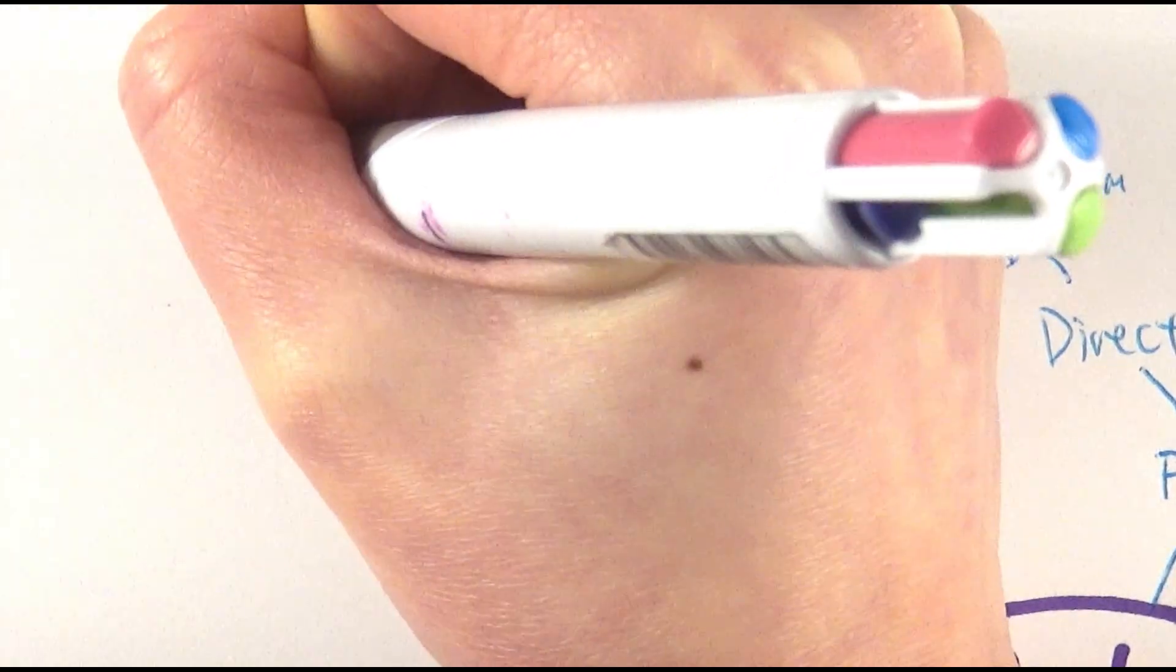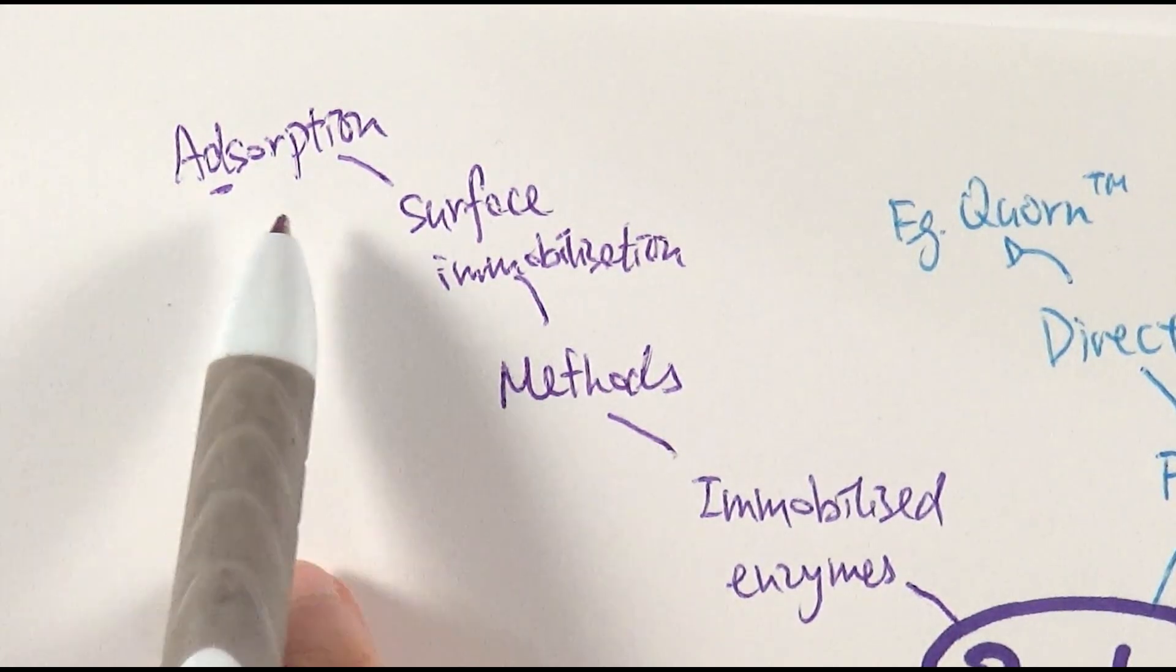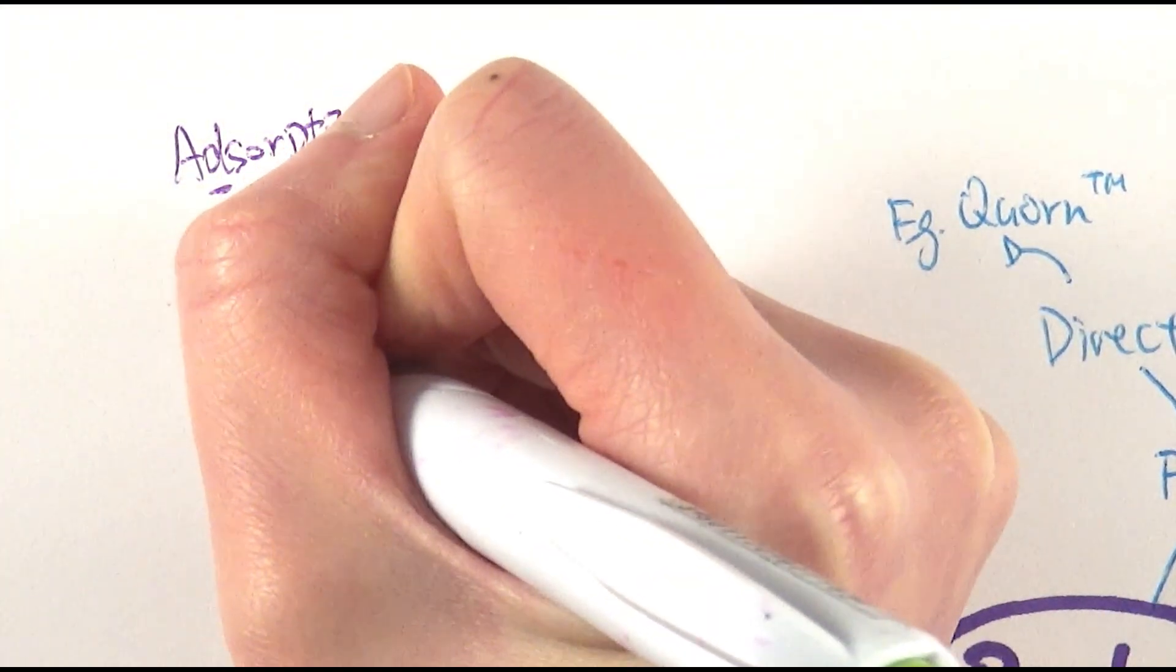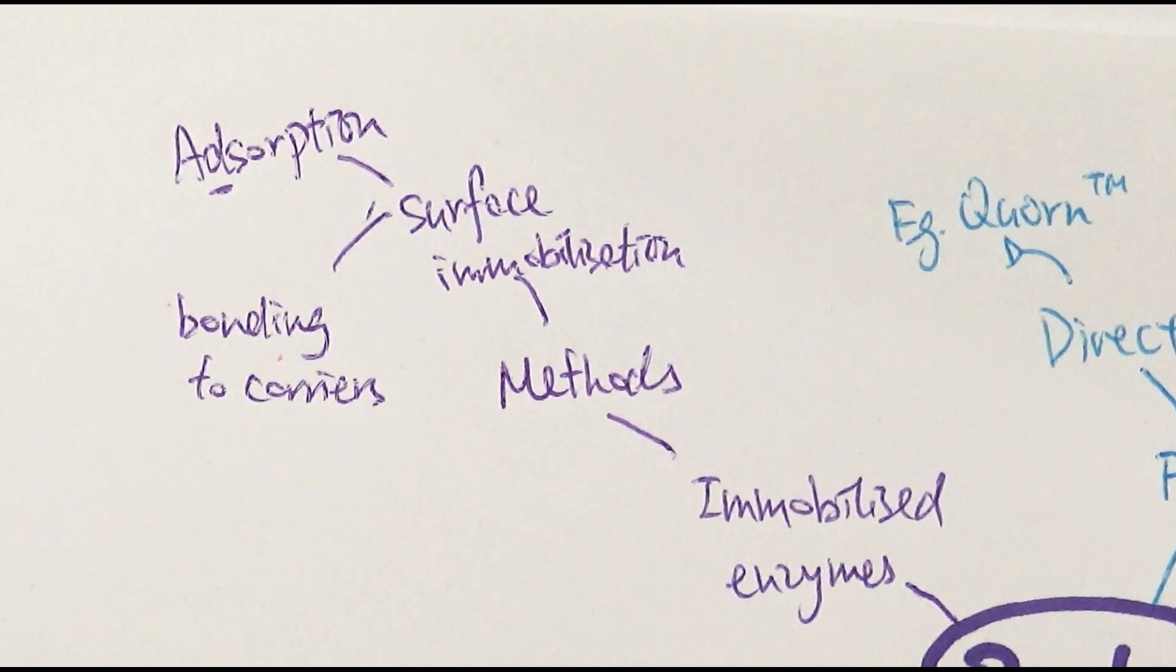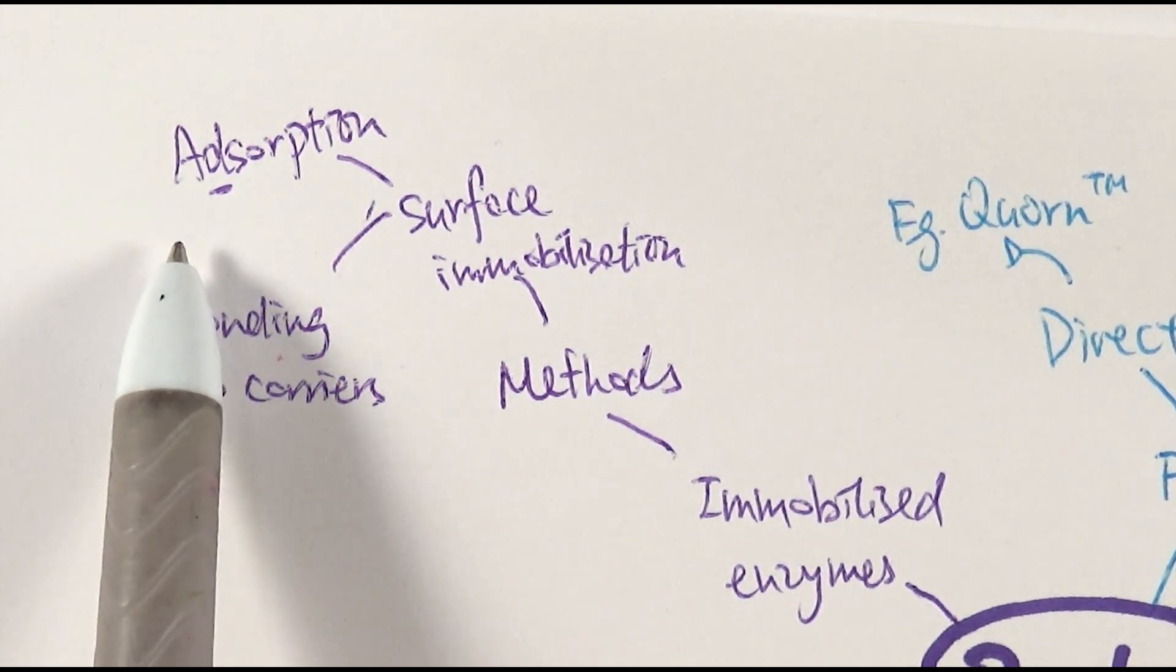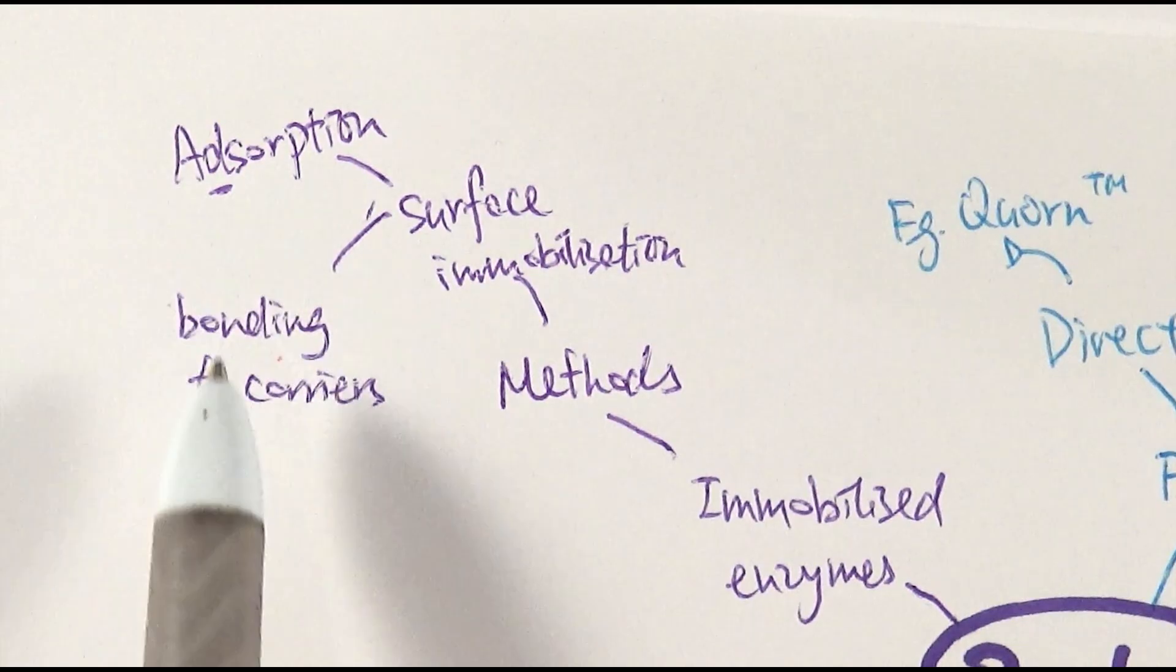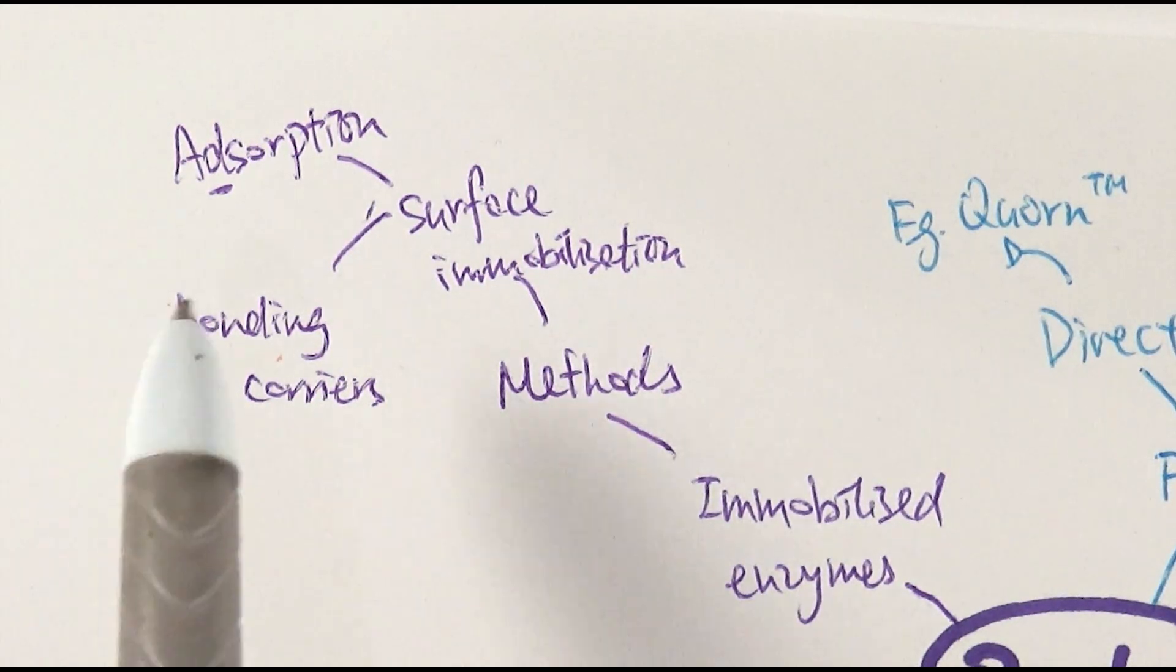One of the methods is called adsorption. Notice it's adsorption with a D, not absorption which is a B, that's totally different. So that's one of them, where they're just simply sticking the enzymes on the surface. Or perhaps you can have ionic or covalent bonding to carriers. They're both very similar, sticking enzymes on the surface. However, adsorption is using some weaker bonds, so it's a bit more flexible. They can move about a little bit more, but easier to be lost in the solution. Whereas for bonding to carriers, they're using ionic and covalent bonding which is way stronger. So it's harder for them to be lost, which is good. However, there is less flexibility in terms of the active site and the enzyme. So perhaps the efficiency is not as high as adsorption.